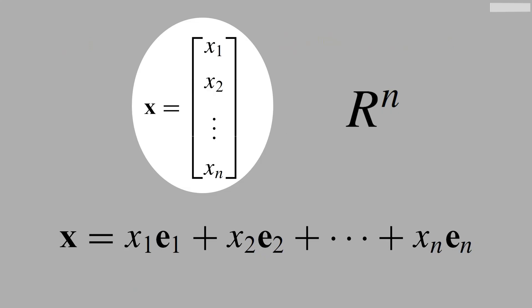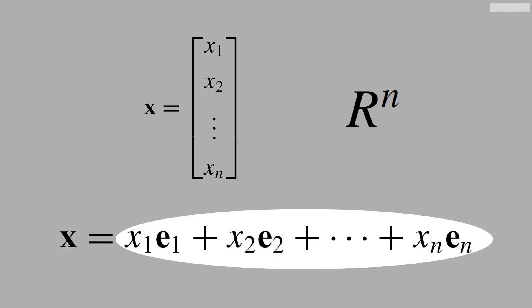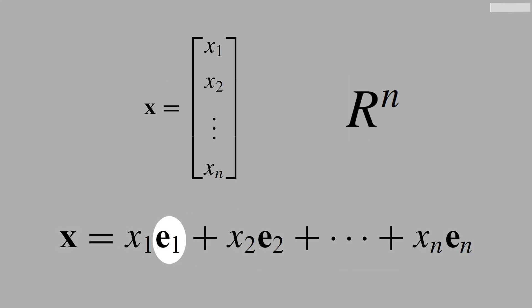Let's take this vector x in Rn. See that x can be written as a linear combination of the vectors e1, e2, until en.